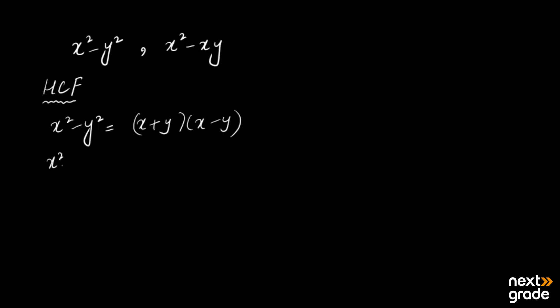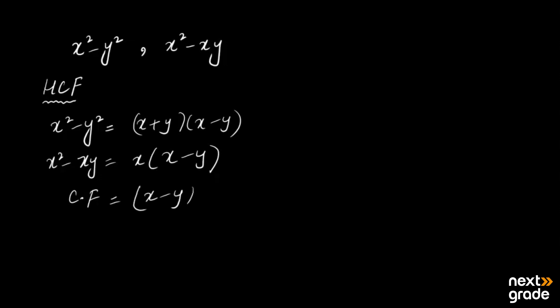To find the HCF, just as you do prime factorization for numeric values, here we do simple factorization. The factorization of x²−y² is (x+y)(x−y). For x²−xy, take x common, so the answer is x(x−y). The common factor is x−y. According to the first definition — the highest number of factors common to all given expressions — x−y is the HCF.